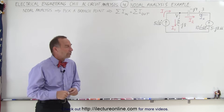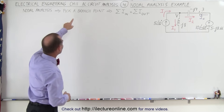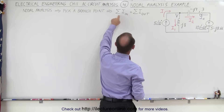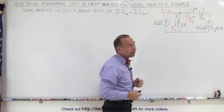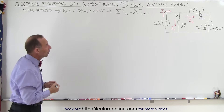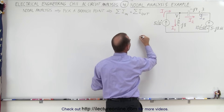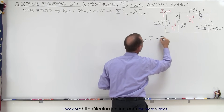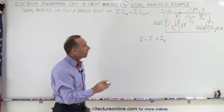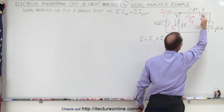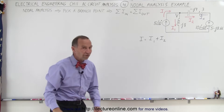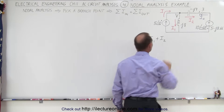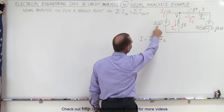For nodal analysis, we pick a branch point — in this case we have just one — and call the voltage at that branch point v. We then sum up all the currents entering and leaving the branch point. Currents entering must equal currents leaving, so i equals i1 plus i2. Even if the current flows opposite to our assumed direction, we just call it i2 to the right and switch it around afterwards.